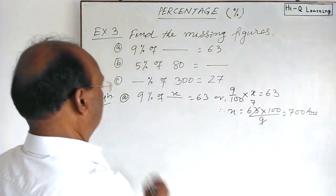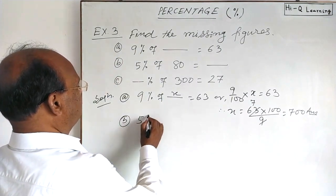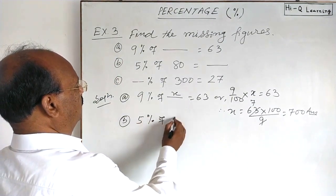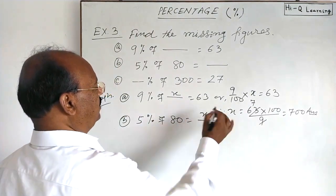Now let us see question b. 5% of 80 equals how much? The figure is missing, so we write x.